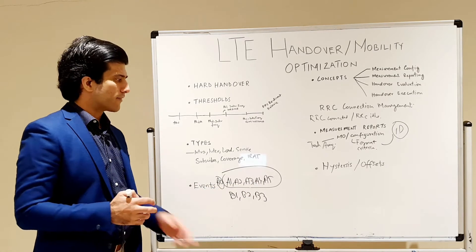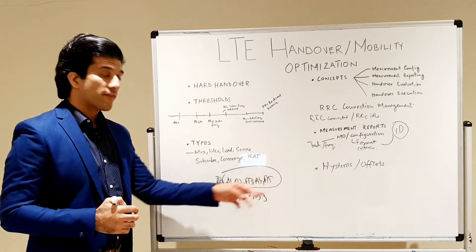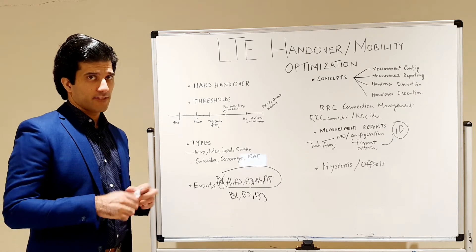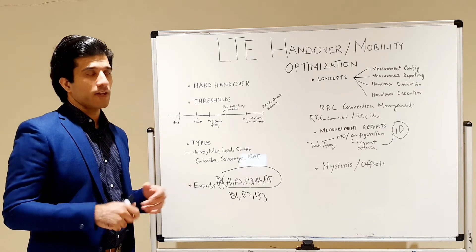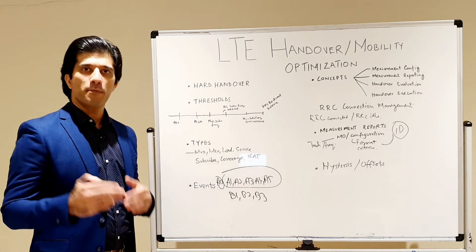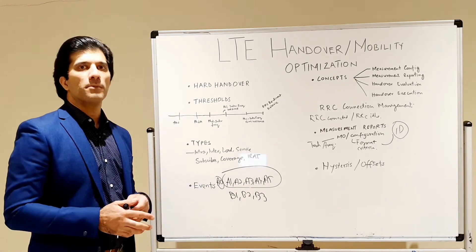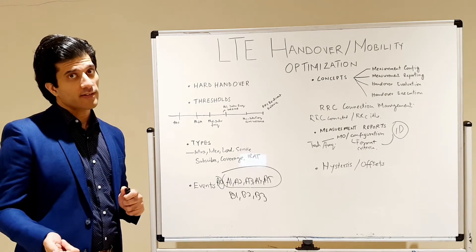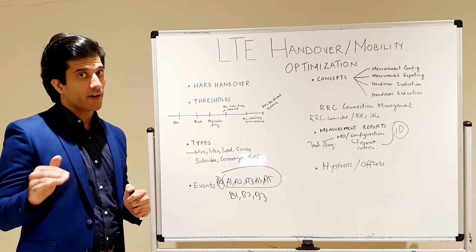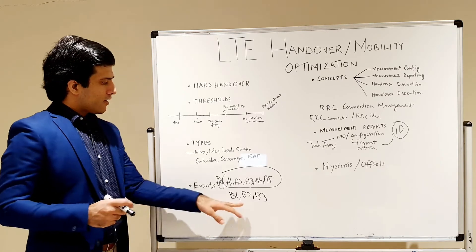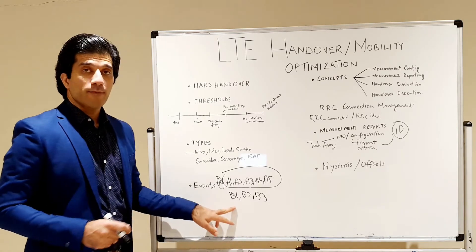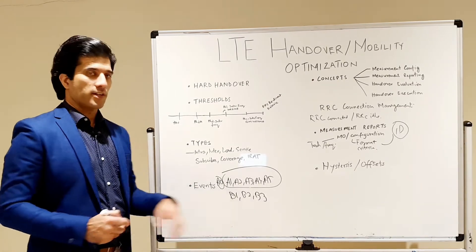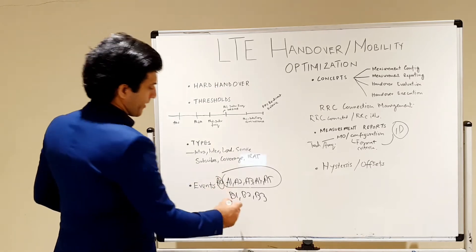A4 is used for load balancing and other purposes. A5 is a combination event where your serving cell is poorer than a particular threshold and your neighbor cell is better than a particular threshold. Similarly, B1, B2, and B3 events typically cover the IRAT part of handovers.